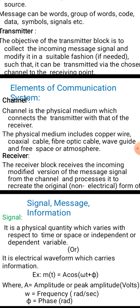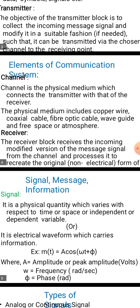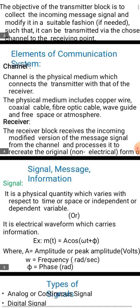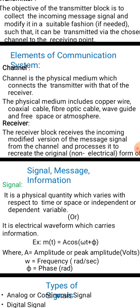Linear distortions can be eliminated or reduced using an equalizer, whose frequency characteristics are inverse to those of the channel. Nonlinear distortion is caused by channels whose attenuation is dependent on the amplitude of the signal passing through them.